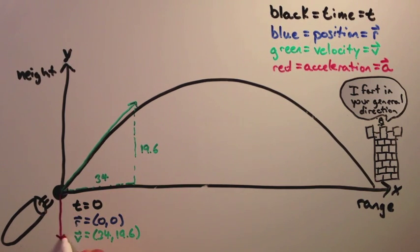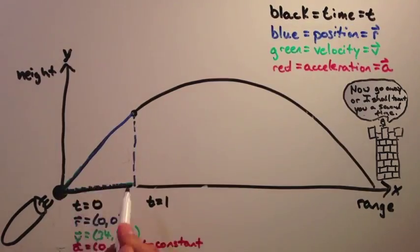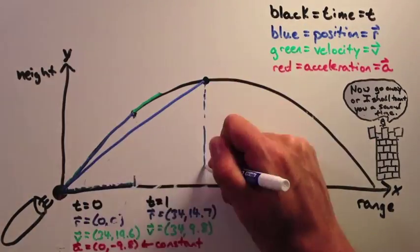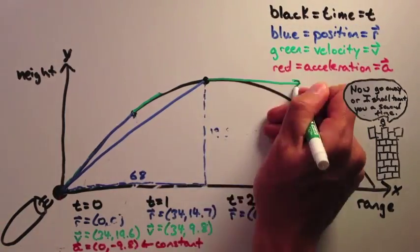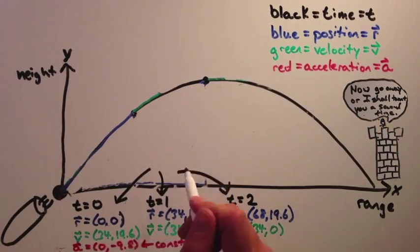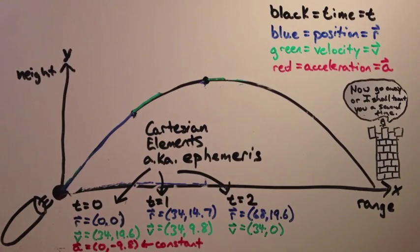Assuming that there is no air resistance, the only force acting on the cannonball is a constant downward acceleration of 9.81 meters per second squared. At any point in time, you can characterize the current state of the cannonball by recording the x and y components of its position and velocity. These state vectors, which are also called the ephemeris, are a simple form of Cartesian elements.